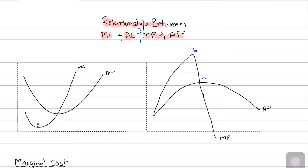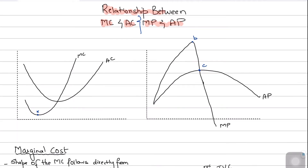As discussed in previous videos, your marginal cost would initially be falling, and after diminishing returns set in — that is, after point X — it would be rising. Point X is where diminishing returns set in and marginal cost is at its lowest. We've also discussed that the average cost curve is U-shaped: it goes down and then starts increasing.